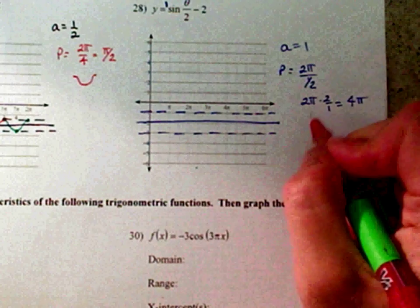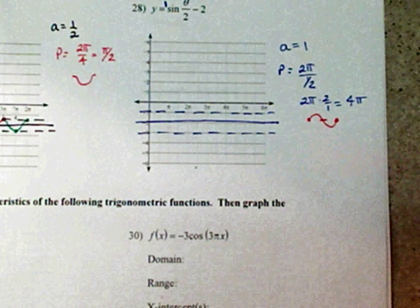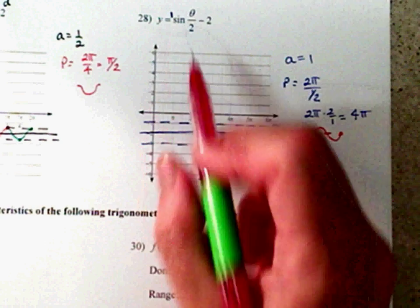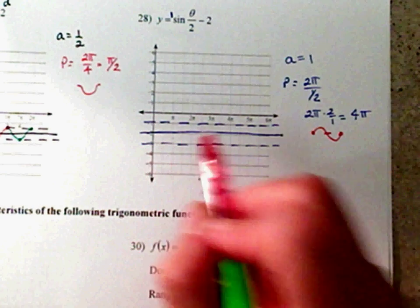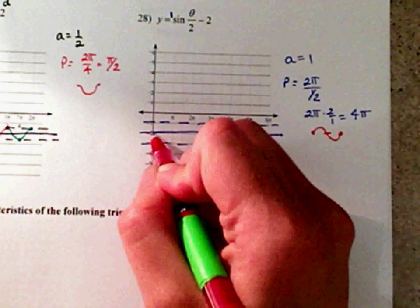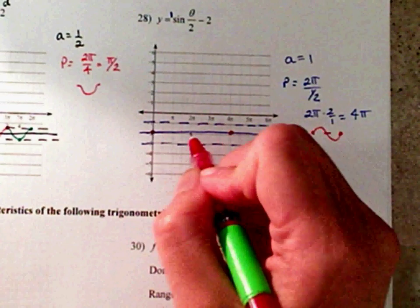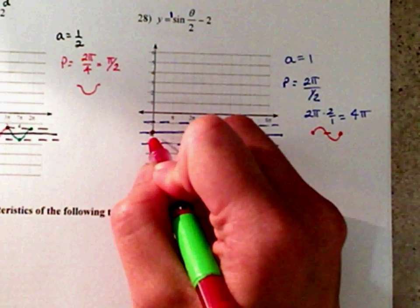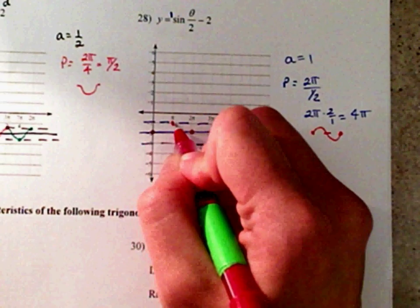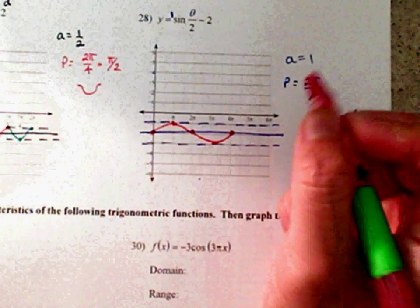You have a sine graph. Starts in the middle, goes up, comes down, hitting the midline at three places. Because it's a positive. If it had been a negative, you would have gone down. So, starting in the middle, ends at 4 pi. Halfway between 0 and 4 pi is 2 pi. Halfway between 0 and 2 pi, you're going to go up. At 3 pi, you're going to go down. So you kind of get the gist of the shape.